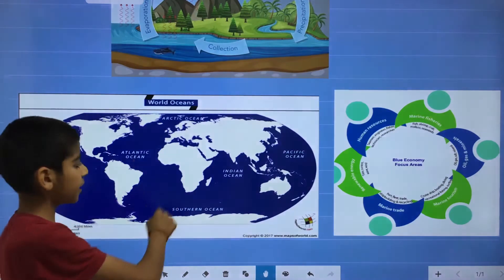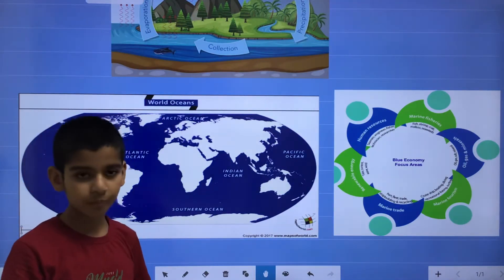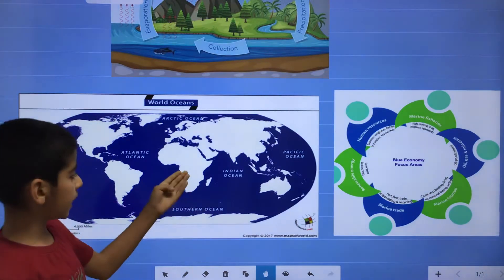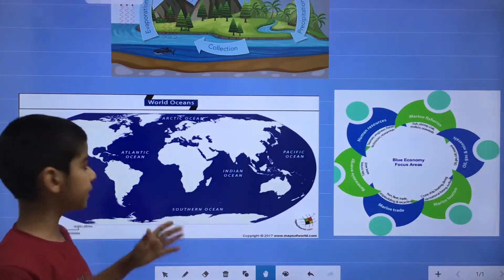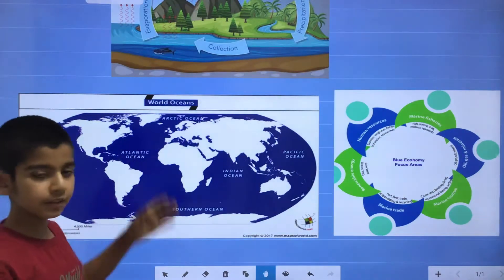Atlantic Ocean is located in East, there is Africa and Europe. And in West, there is North America and South America. And in North, there is Greenland.